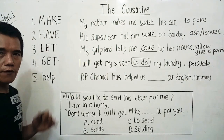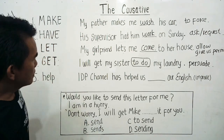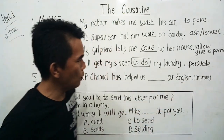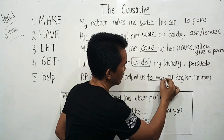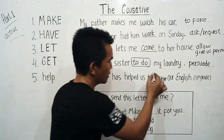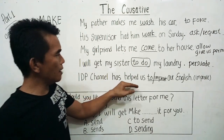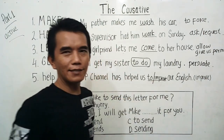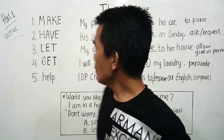The last one is causative 'help.' Of course we have known what the meaning of help is. Example: 'IDP Channel has helped us ___ our English.' The main verb is 'improve.' For 'help,' we can use the to-infinitive: 'has helped us to improve our English,' and we can also use the base form: 'has helped us improve our English.' Both forms are acceptable for causative 'help.'